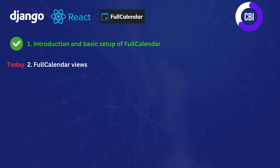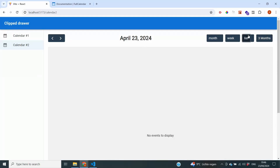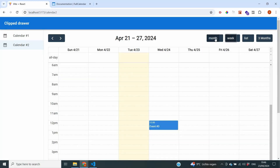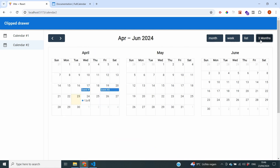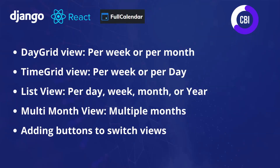In this video, we're going to continue and enable different kinds of views in our calendar. We're going to make sure that users can use buttons in the calendar to switch between different views. We'll cover all of the views that are available for free. We're going to start with the options for the day grid view, then I'll show you how to add buttons on top of our calendar to switch between the different views.